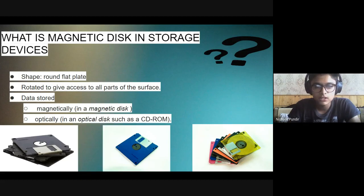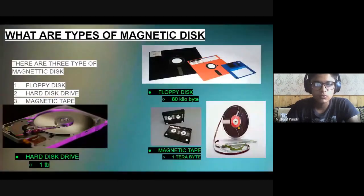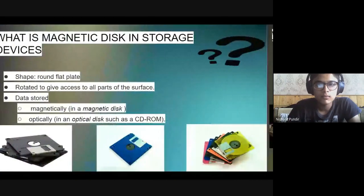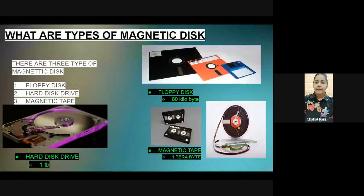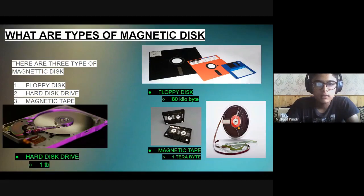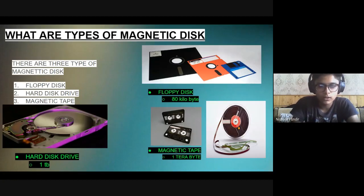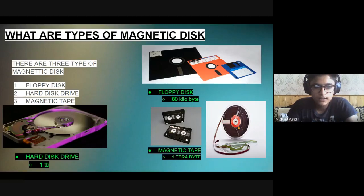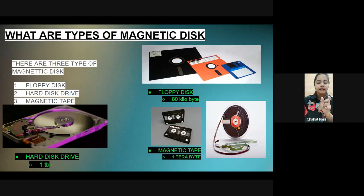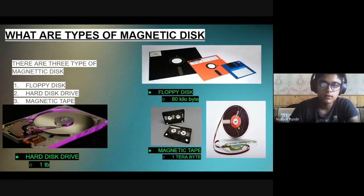There are three types of magnetic disks: floppy disk, hard disk drive, and magnetic tape. Floppy disk can store up to 80 kilobytes. Magnetic tape can store up to one terabyte. Hard disk drive can also store up to one terabyte - these values may vary. Note: when writing Terabyte, the 'T' should be capital, just as 'M' is capital in Megabyte.